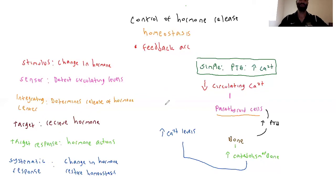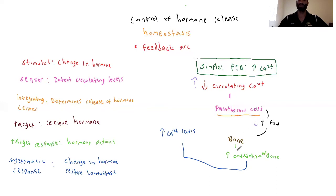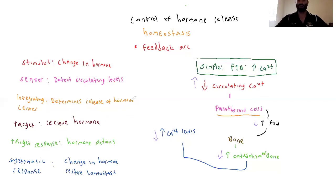This pathway can also run in the opposite direction. If circulating calcium is too high, that's sensed, and the integrating center would reduce parathyroid hormone secretion, resulting in reduced catabolism of bone and reduced calcium levels. So we see the pathway can be adjusted in either direction to maintain homeostasis. Next, we're going to talk about the pituitary.